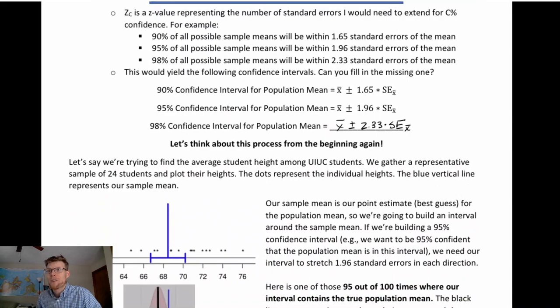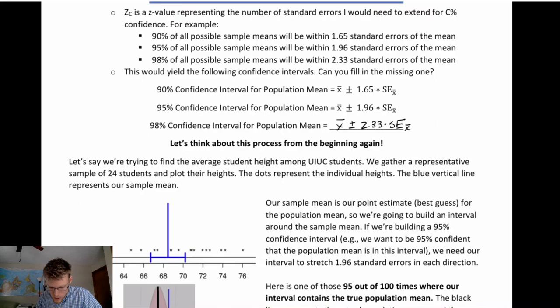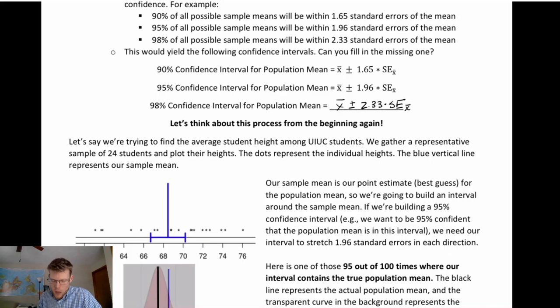Let's say we're trying to find the average student height among UIUC students. We gather a representative sample of 24 students and plot their heights. The dots represent the individual heights, and the blue vertical line represents our sample mean — our x-bar value. This interval represents the confidence interval we built to try to capture mu. We decided to build this confidence interval by stretching out 1.96 standard errors.